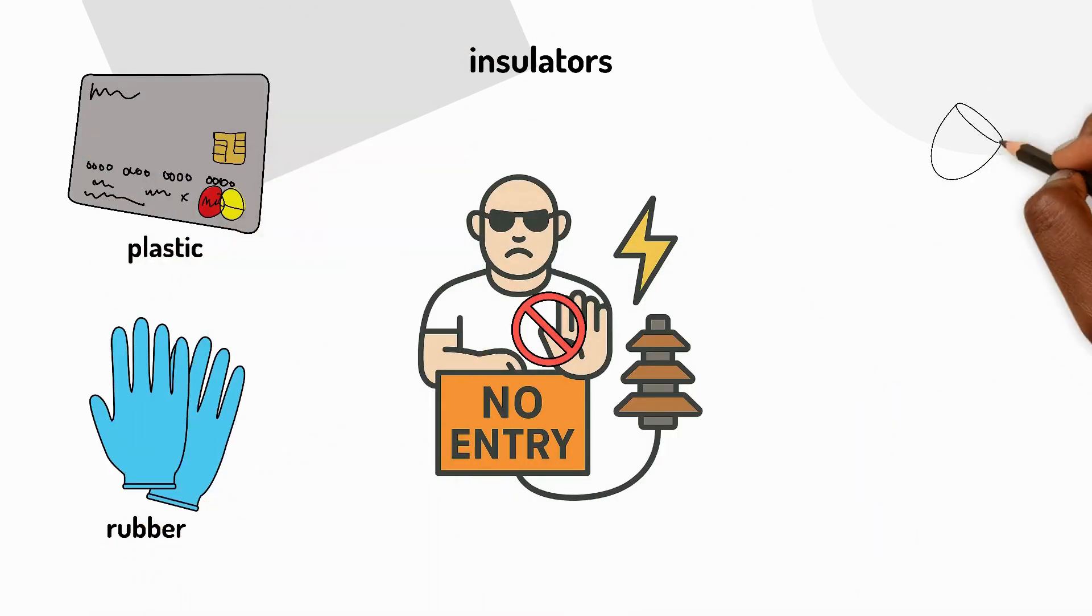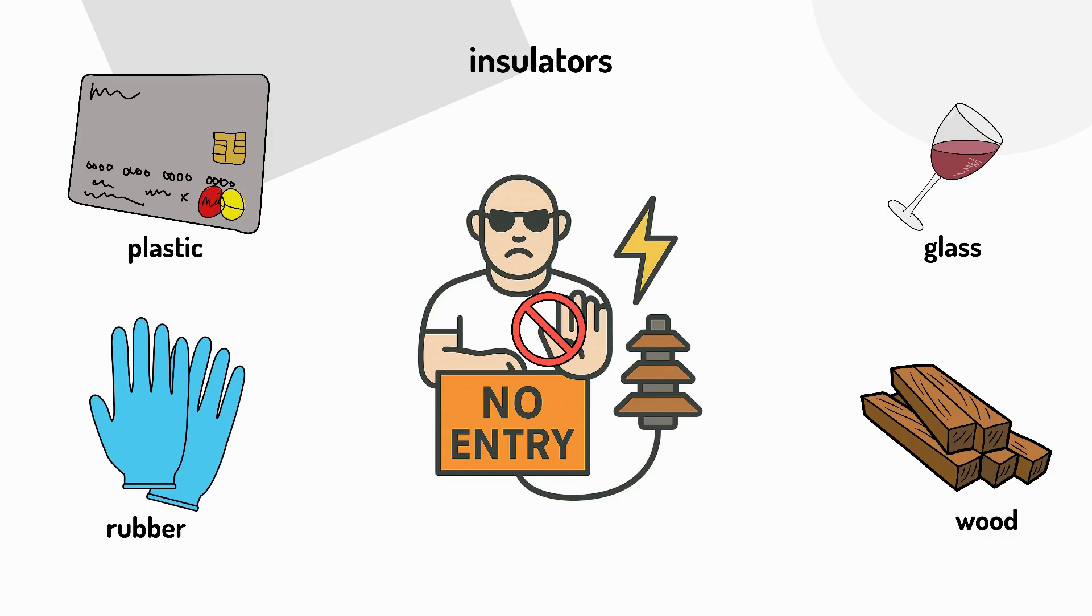Plastic, rubber, glass, and wood are good insulators. They resist the flow of electricity and keep it contained.